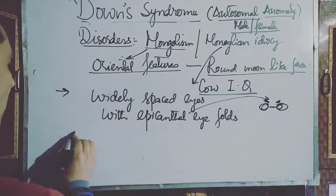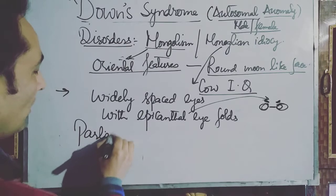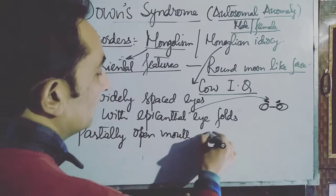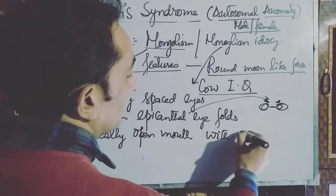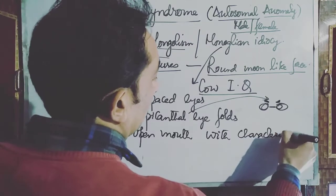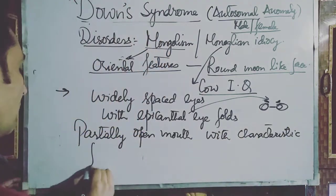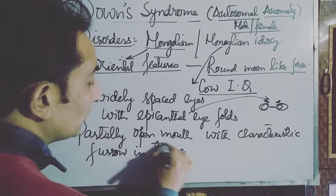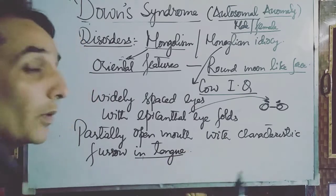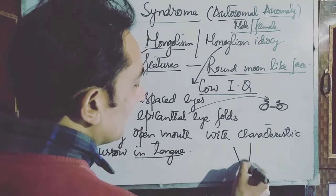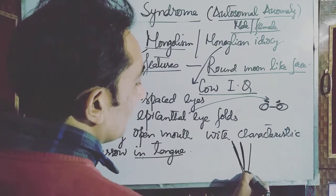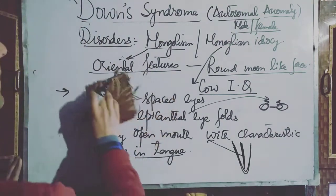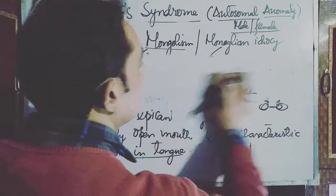Another feature is that they have a partially open mouth with a characteristic furrow in the tongue. Usually they have a partially open mouth, and their tongue has a typical characteristic furrow which is different from the normal furrow — a special characteristic furrow.